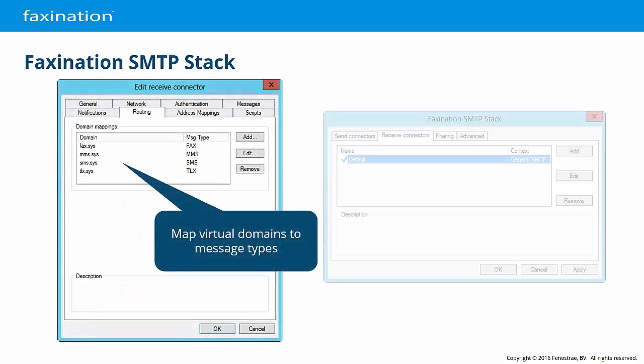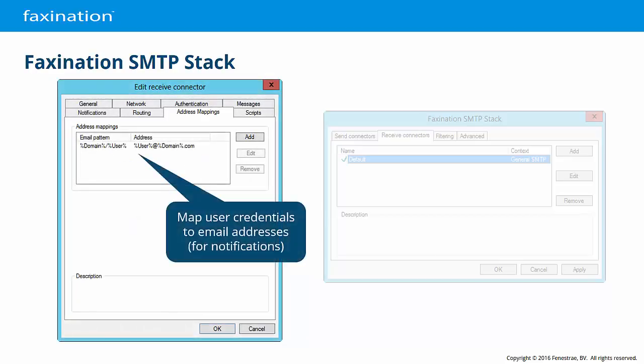The Routing tab allows you to associate virtual domains with the message types that are available on your server. For instance, the virtual domain fax.sys is not automatically associated with fax messages until that association is explicitly defined here. The Address Mappings tab allows you to modify SMTP email addresses; once modified, the new address will be used for notifications when notifications are enabled. You may also configure send notifications to be delivered through an entirely different host, such as web services, printers, or the Exchange connector.